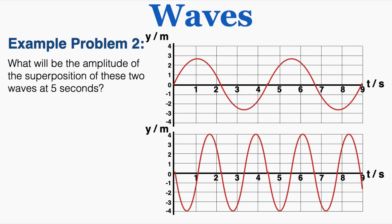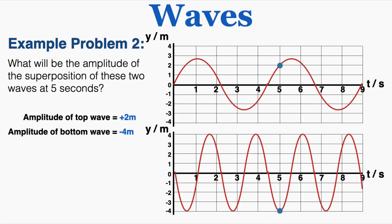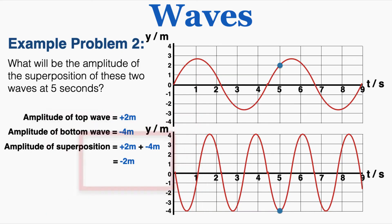Example problem 2 asks: what will be the amplitude of the superposition of these two waves at 5 seconds? This is an amplitude versus time graph of two unrelated waves. I just need to remember that the amplitude of two superimposed waves equals the sum of the amplitude of each individual wave. The top wave has an amplitude of positive 2 at 5 seconds, and the bottom wave has an amplitude of negative 4, so the superposition produces a single amplitude of positive 2 plus negative 4, which equals negative 2 meters.